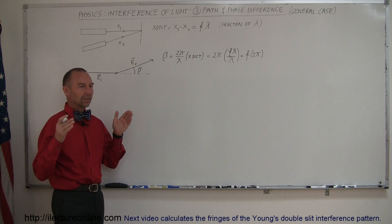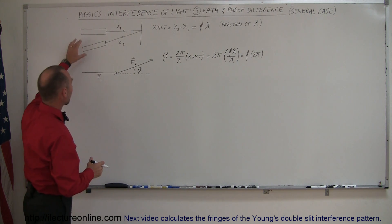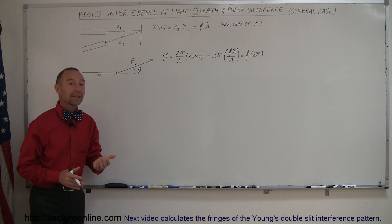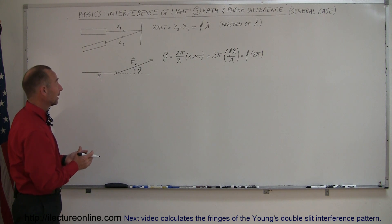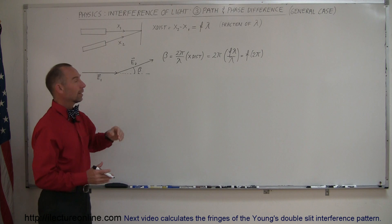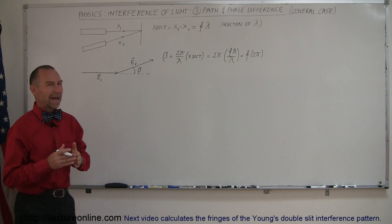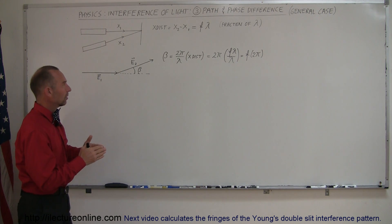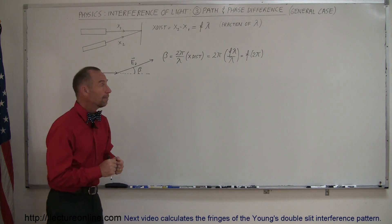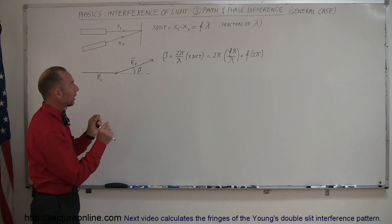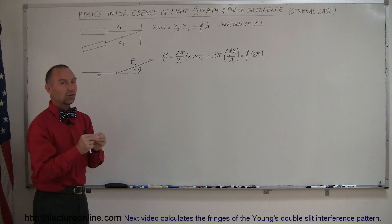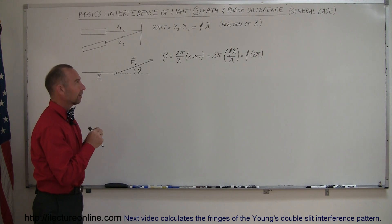Whenever we have two rays that come together from two different sources, but they put out the exact same intensity and same wavelength of light — if one ray has to travel a greater distance than the other, there's going to be a path-length difference between the two rays. We call that the extra distance traveled by one ray compared to the other, and when they arrive at the same spot, the difference is usually a fraction of a wavelength.